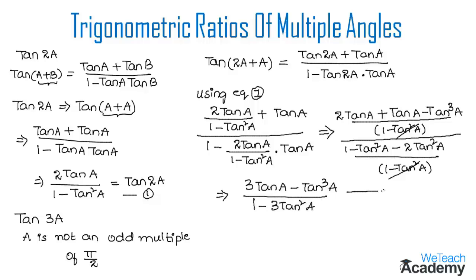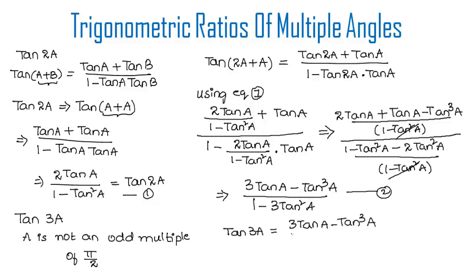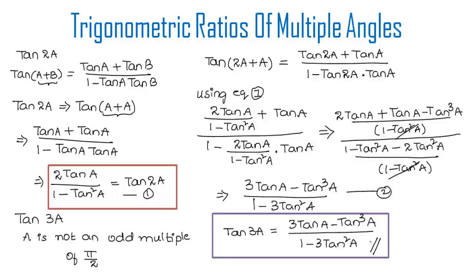This gives us equation 2, the formula for tan 3a: tan 3a = (3 tan a - tan³a) / (1 - 3 tan²a). We have now derived the formulas for both tan 2a and tan 3a.